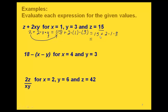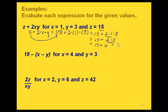Using order of operations, multiplication comes before addition. Going left to right: 2 times 1 is 2, then 2 times 3 is 6. Finally, 15 plus 6 gives us 21.